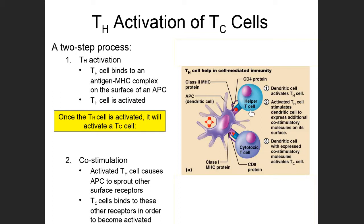Once the helper T cell has become activated, the second step occurs — known as co-stimulation. During co-stimulation, the activated helper T cell causes the antigen-presenting cell, in this case the dendritic cell, to sprout a surface receptor that wasn't there previously. This receptor only appears on the APC after it has bound to helper T and the helper T has become activated. This new receptor provides a place for cytotoxic T cells to bind, and that binding activates the cytotoxic T cells so they go out into the body looking for cells displaying that particular antigen.